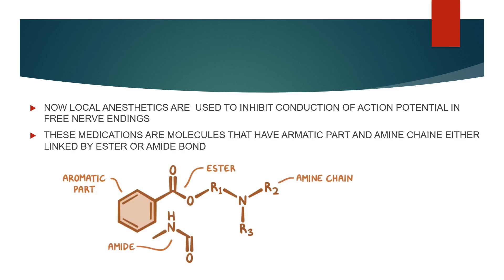Local anesthetics are used to inhibit the conduction of action potentials in free nerve endings. These medications are molecules that have an aromatic part and an amine chain that are linked by either an ester or an amide bond.